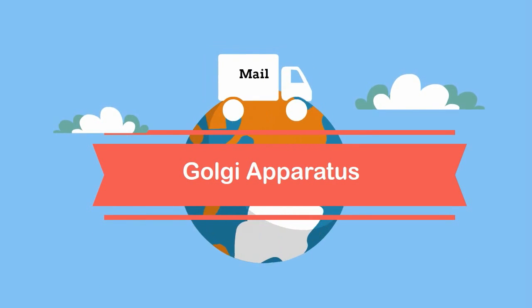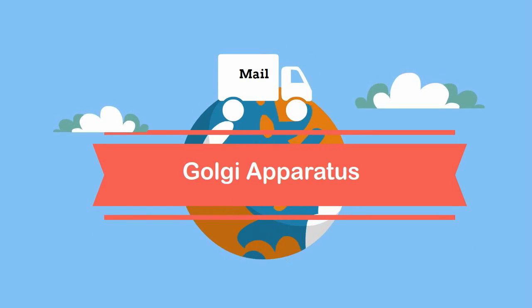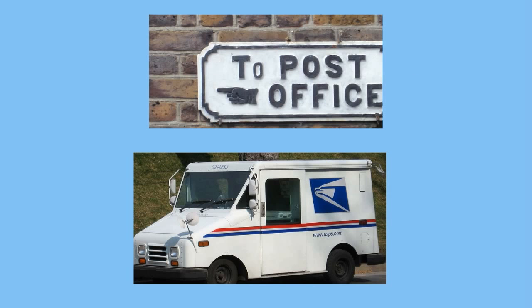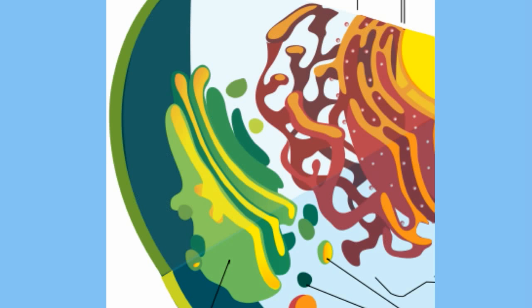Welcome to MooMooMath and Science. In this video I would like to talk about the Golgi Apparatus. You may have heard the Golgi Apparatus is a bit like a post office. It receives proteins, repackages them, then sends them out into the cell like a post office does. In fact, that's a little bit what the Golgi Apparatus does.